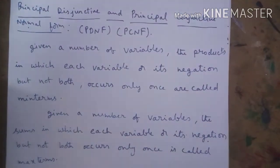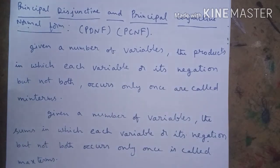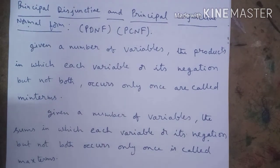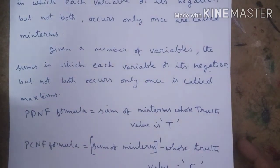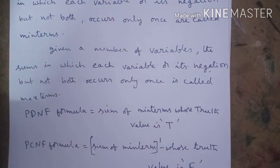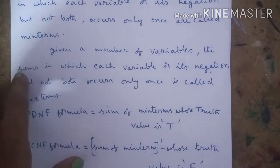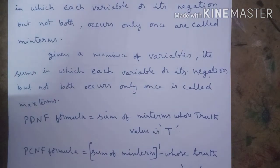What is meant by min term? If P occurs, then negation P does not occur; if Q is there, negation Q does not occur. Either the variable or its negation, but not both, occurs only once in the product — these are called min terms. In the same way, the sums in which each variable or its negation, but not both, occurs only once are called max terms.